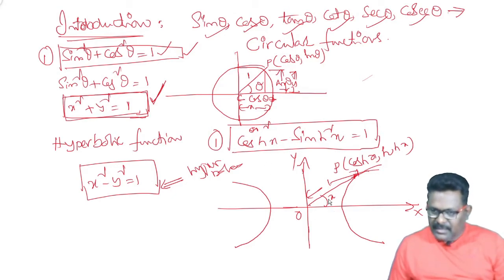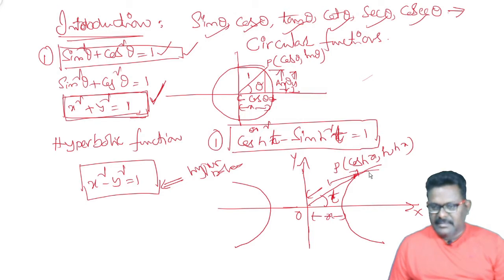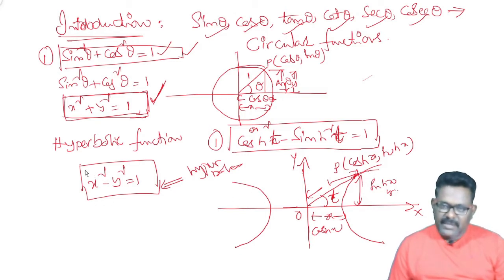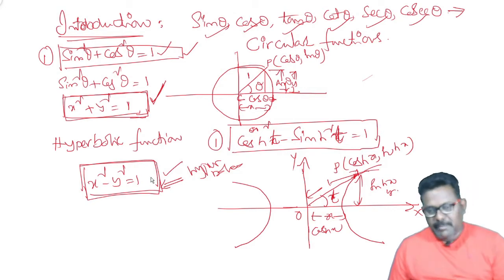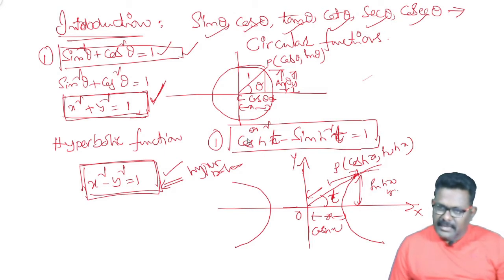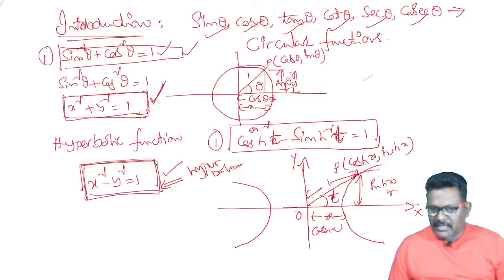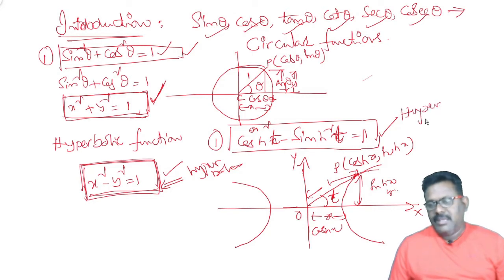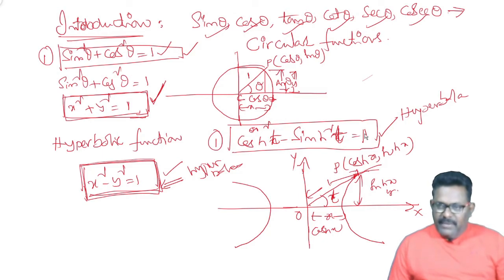For the hyperbola, we use cosh squared t and sinh squared t as variables. Cosh squared x minus sinh squared x equals 1. This is the hyperbola equation: x squared minus y squared equals 1. So these functions represent the hyperbola, and we call them hyperbolic functions.